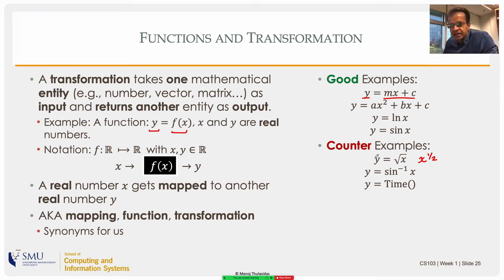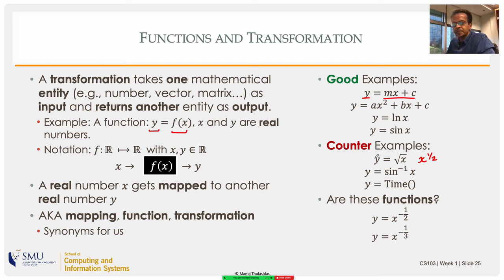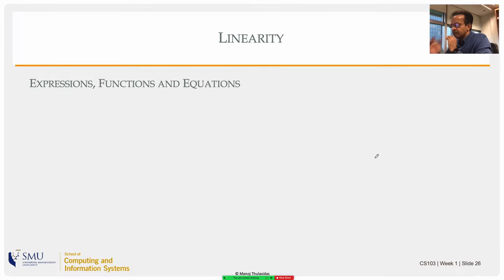Does y = x^(-1/2) represent a function? It has the same objection as x^(1/2) — it's not single-valued. What about x^(-1/3)? That's an interesting case: odd roots of functions can be functions, but even roots are not. With that, let's move on to linearity. We've already learned about expressions, functions, and equations. Each of these objects can be linear or non-linear. Expressions are combinations of variables; functions are named expressions; equations are an expression equal to a constant.